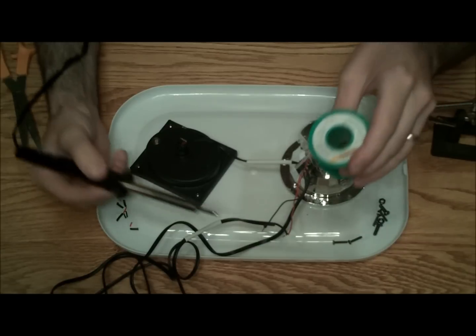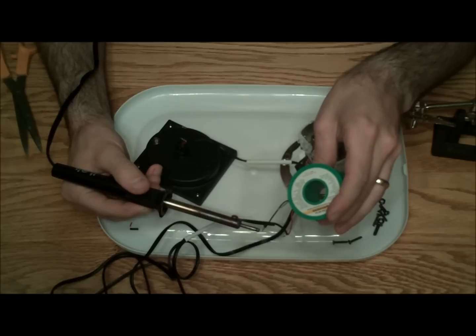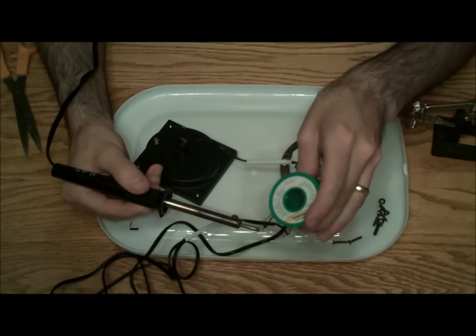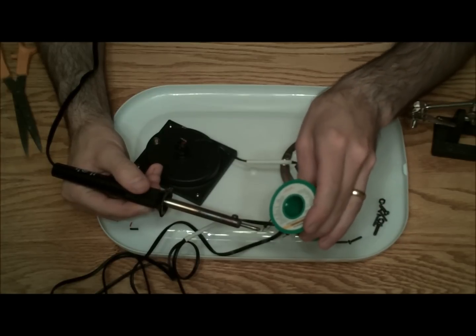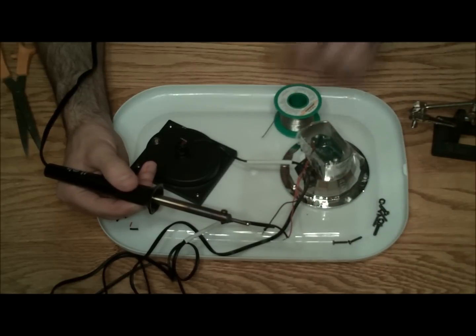Bigger wires, I would just hold the iron on there or solder gun, whichever you have. Let it heat up for a few seconds and then just slowly try to work the solder in there and it'll just absorb into the wire. So that's just a soldering tip.